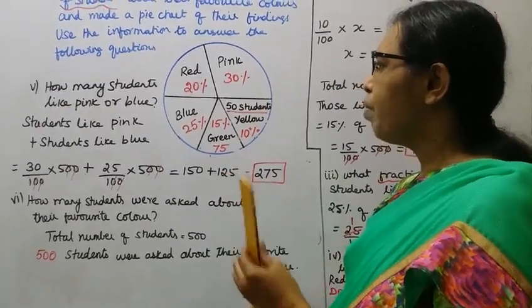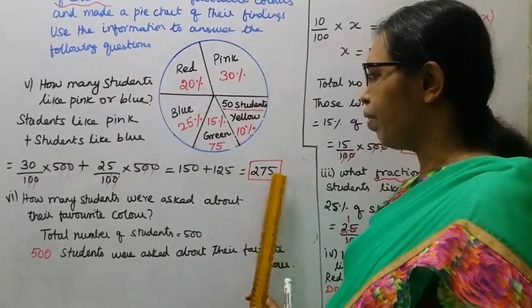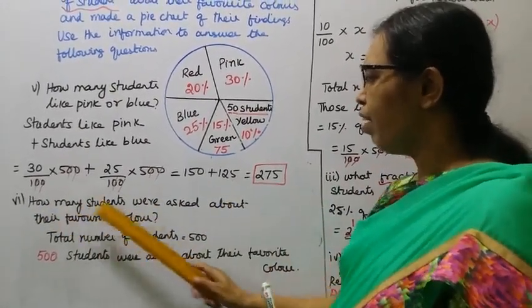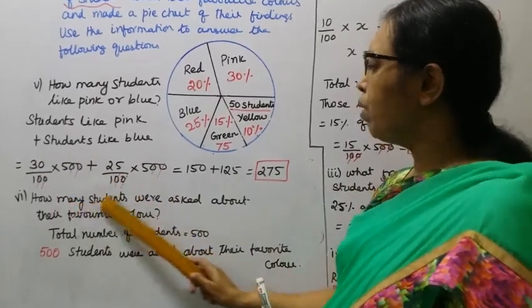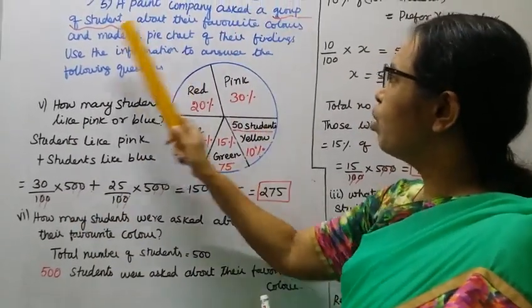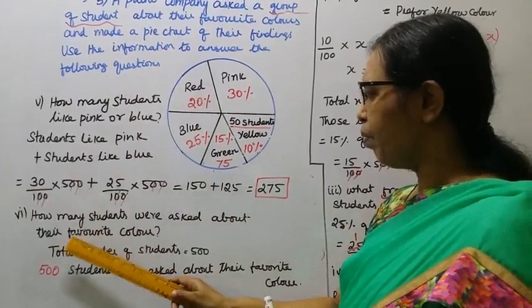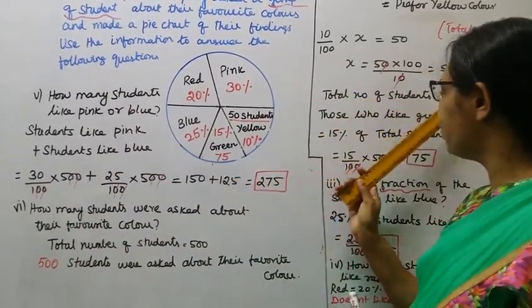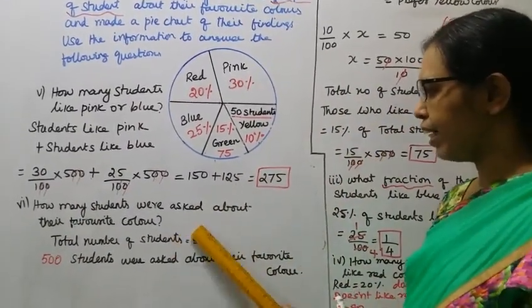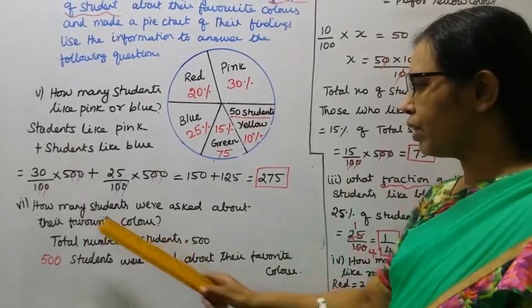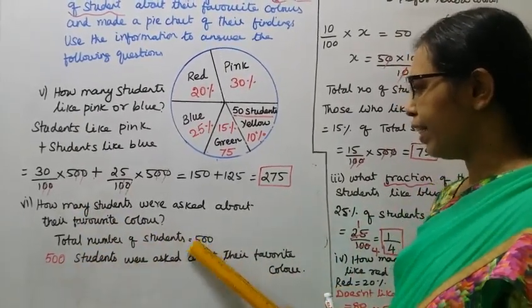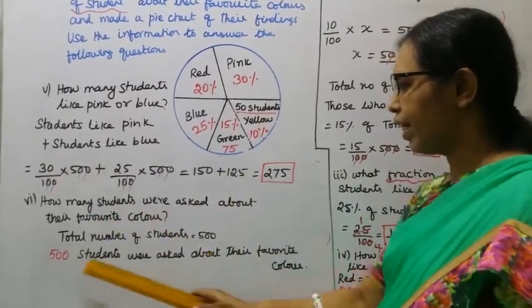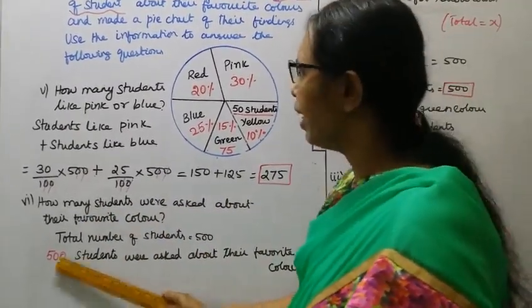Sixth question: How many students were asked about their favorite color? That is the total number of students, which is 500. So 500 students were asked about their favorite color.